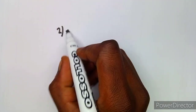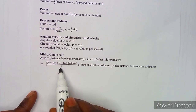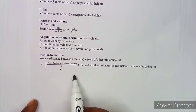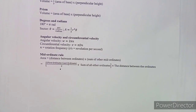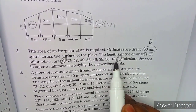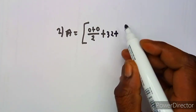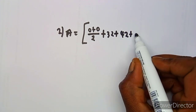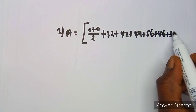Using the same formula: area equals first plus last ordinate over two, plus sum of other ordinates, times the distance. As you can also see on your formula sheet, it is written the same way. Our first and last are both zero, so zero plus zero over two. Then we add all the remaining ordinates: 32, 42, 49, 56, 46, 30, 18.